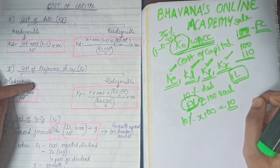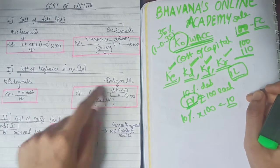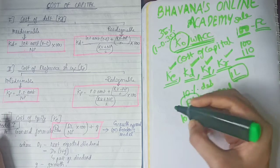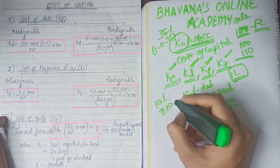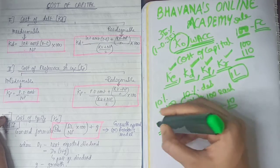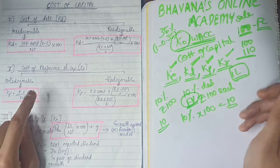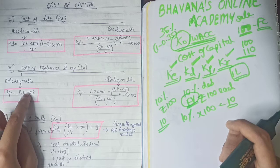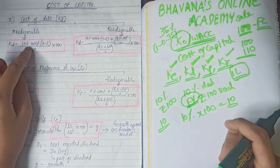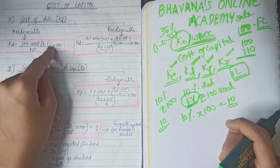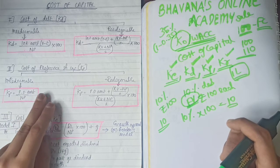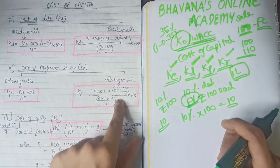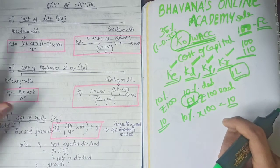Similarly, for cost of preference share capital (KP): for irredeemable preference shares, KP = Preference Dividend Amount / Net Proceeds × 100. For redeemable preference shares, KP = [Preference Dividend Amount + (RV − NP) / N] / [(RV + NP) / 2] × 100. Note: you do NOT apply (1 − T) here, because preference dividend is paid after tax, whereas interest is paid before tax.